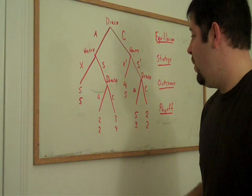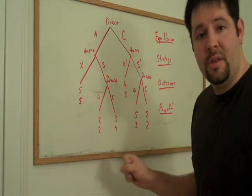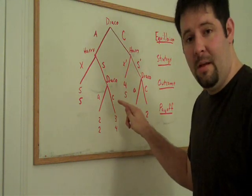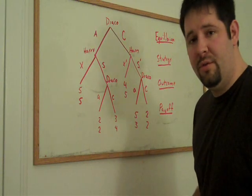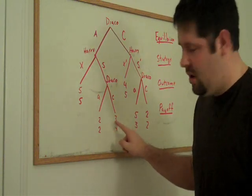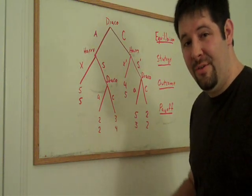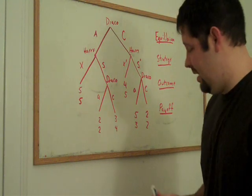On the left branch of the tree, we see that Draco has a choice between A and C. Now, Draco could choose C and get three or he could choose A and get two. So, he's going to choose C and get three.